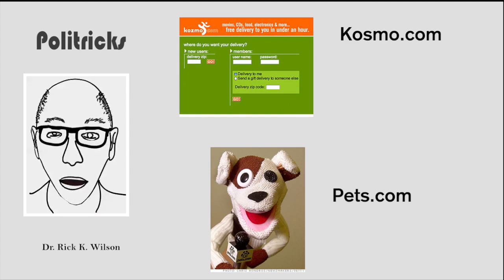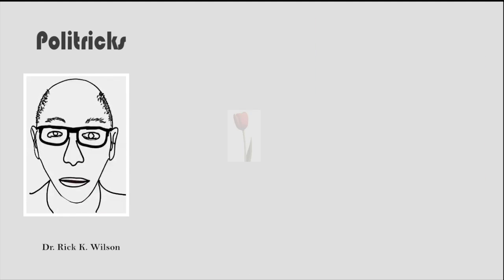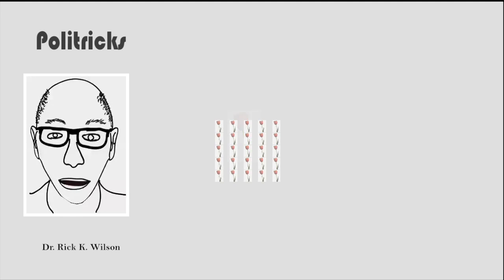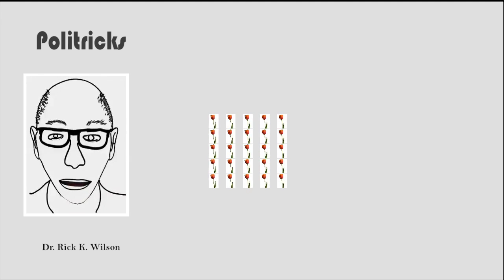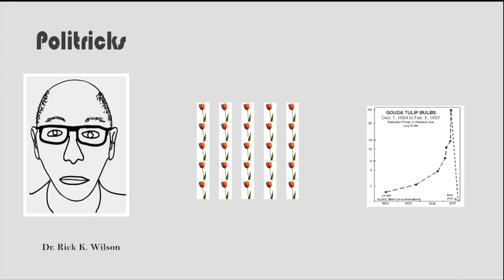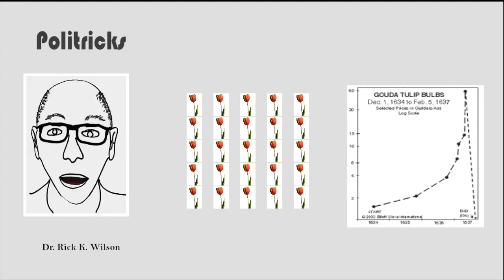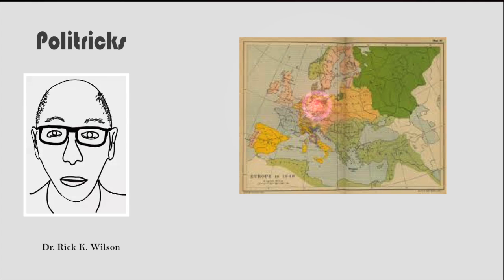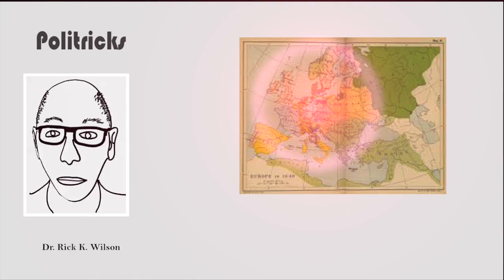For example, the dot-com crash in 1999 and the Dutch tulip mania of 1637. The latter saw a 60-fold increase or more in the price of tulip bulbs in the years before the crash, and a lot of people in Europe lost fortunes and dragged down the Dutch economy for many years. Not so different from the US in 2008.